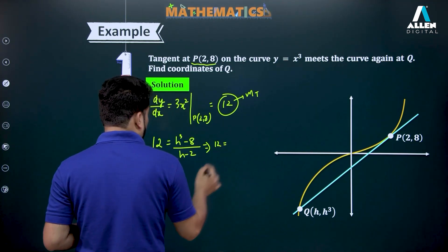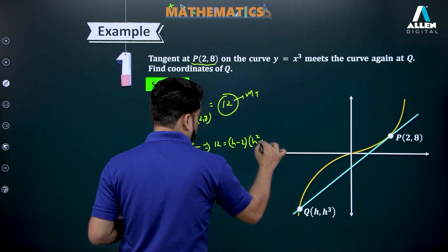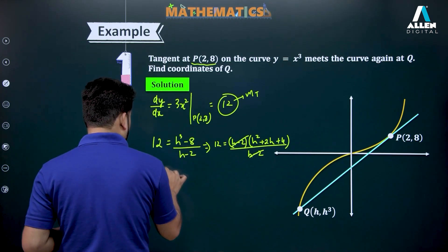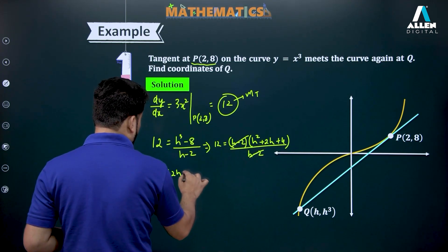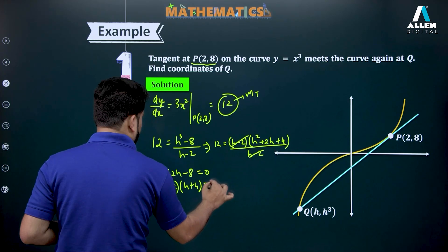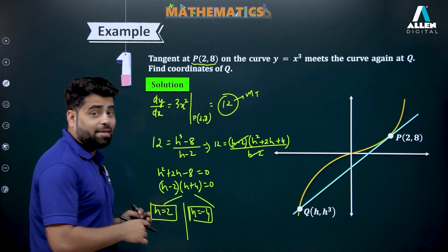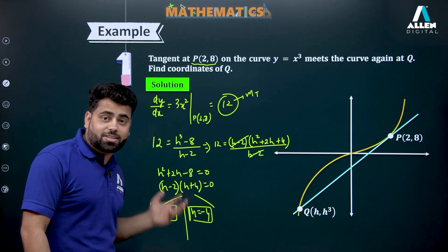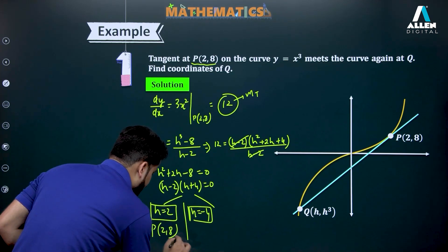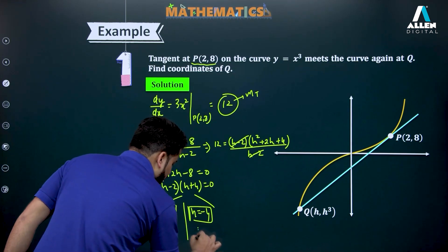I write 12 = (h³ - 8)/(h - 2), and factorizing using the formula for a³ - b³ gives h² + 2h + 4 after (h - 2) cancels. So h² + 2h - 8 = 0, which factorizes as (h - 2)(h + 4) = 0, giving h = 2 or h = -4. After calculations, h = 2 gives the same point (2, 8) already given in the question — one of the points has to be the same.